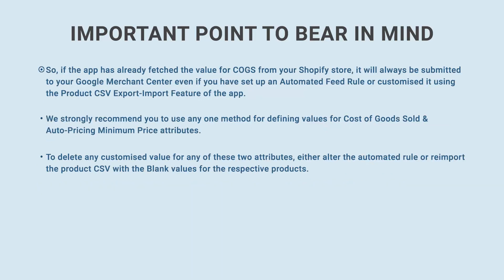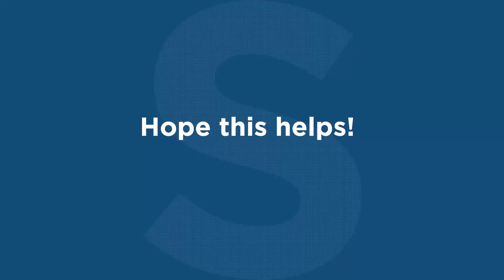So if the app has already fetched the value for COGS from your Shopify store, it will always be submitted to your Google Merchant Center, even if you have set up an automated feed rule or customized it using the CSV export/import feature. We strongly recommend using any one method for defining values for cost of goods sold and auto pricing minimum price attributes. To delete any customized value, either alter the automated rule or reimport the product CSV with blank values for the respective products. Hope this helps. Thank you.